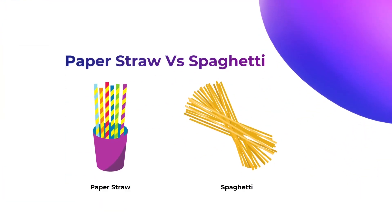Let's consider an example where we compare a paper straw and spaghetti. Which of these two materials will undergo buckling first? Nothing to think much — as it is evident, the spaghetti noodle will buckle first. But why?